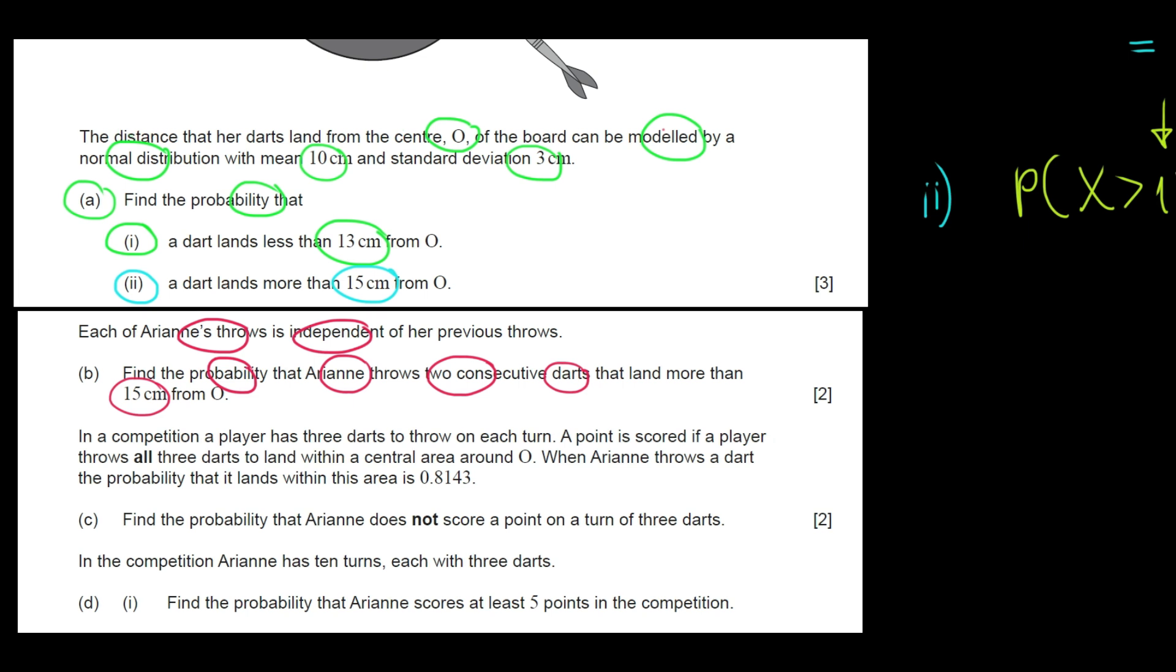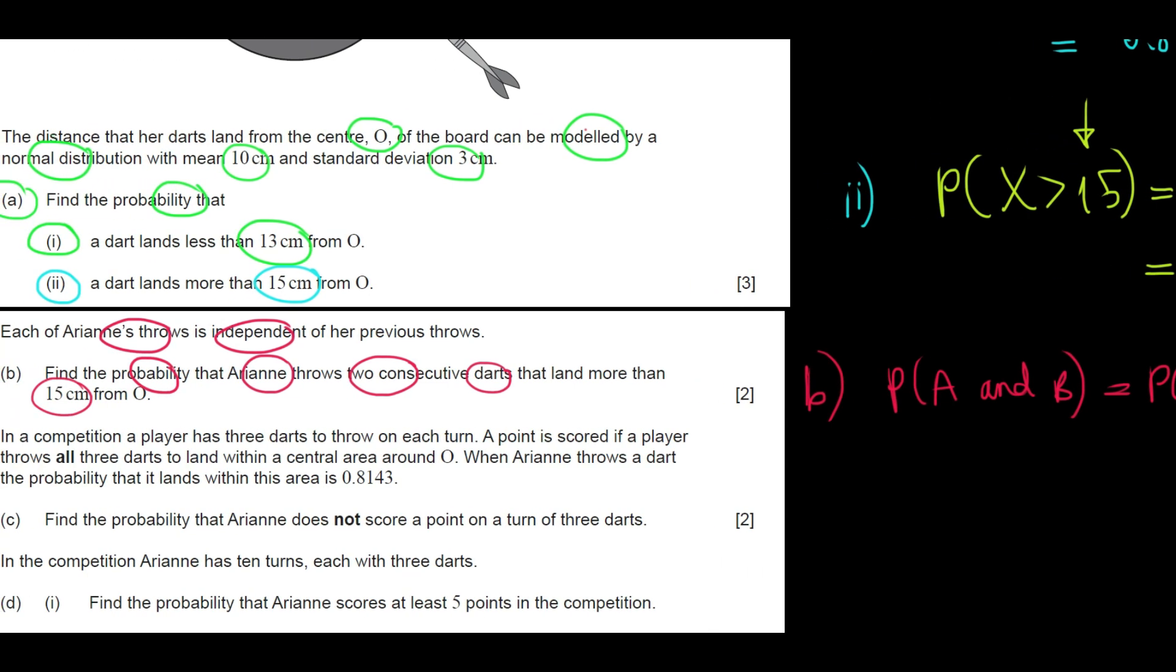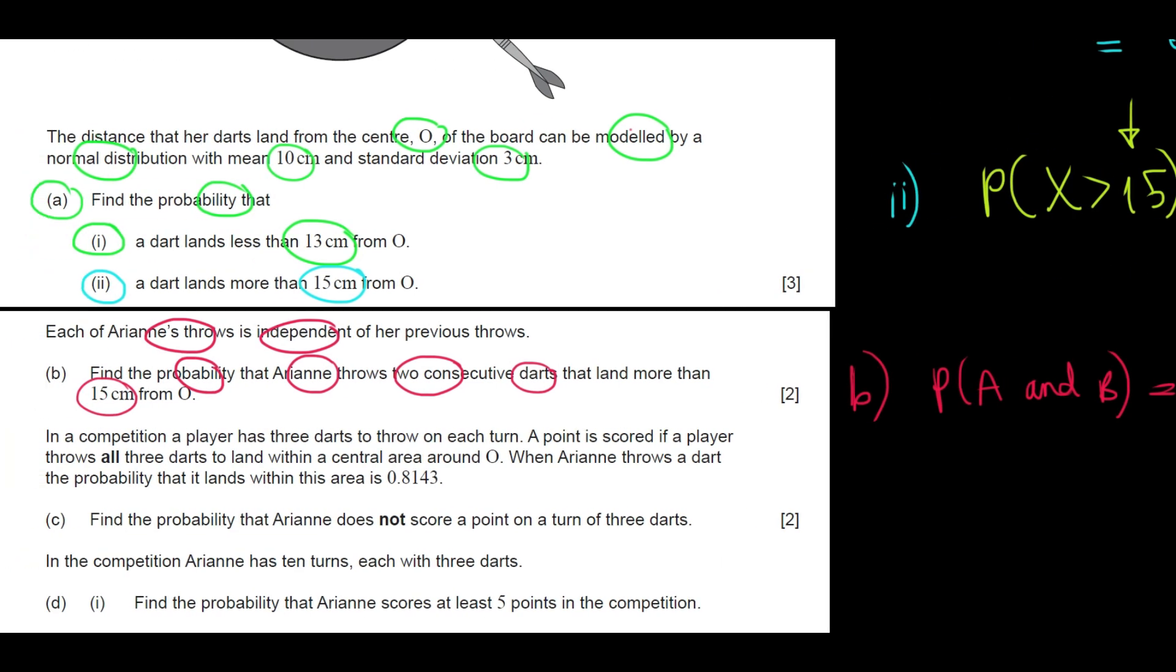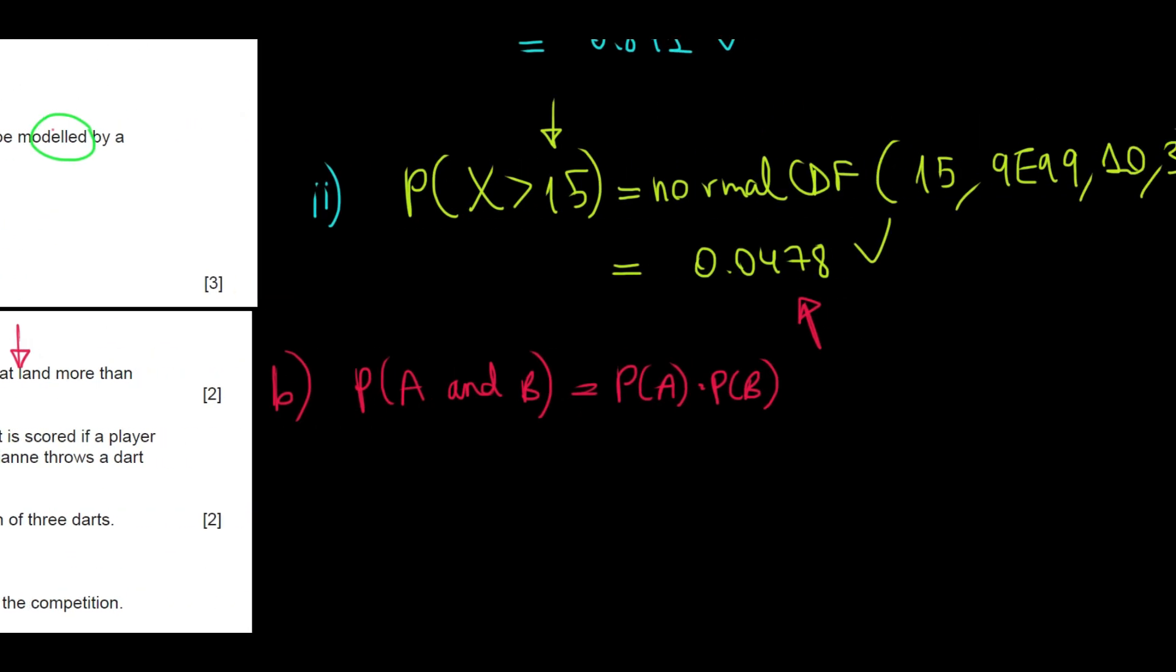So when we have independent events and we want both of them to occur, we know that the probability of A and B, assuming they're independent, is just probability of A times probability of B. In this case, the event is the same, which happens consecutively. So the probability of the event that we'll be considering will be the probability that Ariane lands more than 15 centimeters from O. So I'm going to do just that: 0.0478 times 0.0478. That brings us to 0.00228.